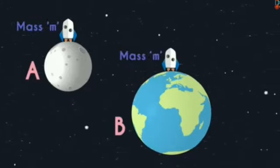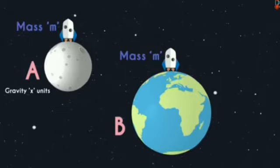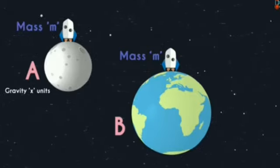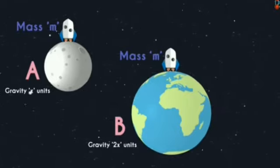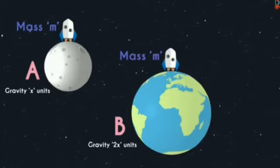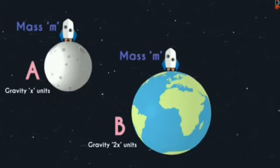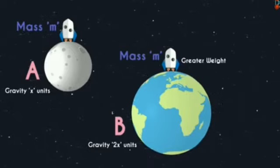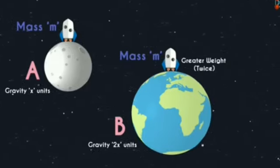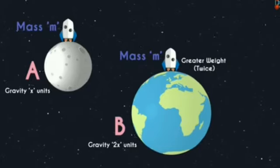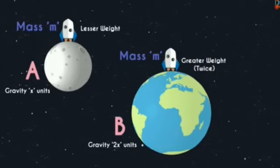In place A, pull of gravity is X units and in place B, the pull of gravity is 2X units. As the gravity is double in B, definitely the weight of the same object having mass M will be more as compared to A. As the gravity is twice more in B than A, weight of the same object will be twice more in B. Now, let us understand what will be the formula for weight.